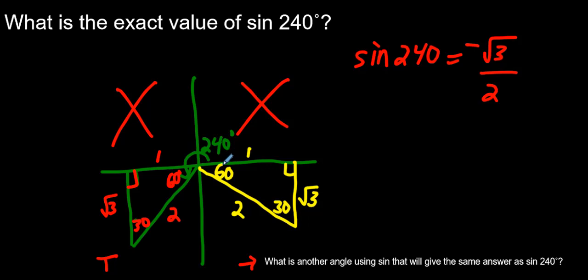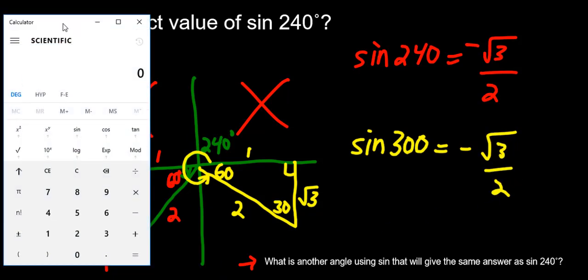And now we have to ask ourselves, what is, it is going to be the same thing. Sine would be opposite over hypotenuse, but sine what? What angle is going to be here? Well, that's going to be the angle that goes all the way from here to here. If all the way around a circle is 360, what's 360 minus this 60 degrees? That would be 300. That should also give us negative root 3 over 2.